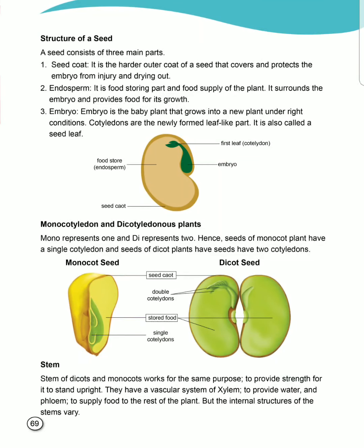Coming to page number 69: Structure of a seed. A seed consists of three main parts, which are seed coat, second endosperm, and the third one is embryo.